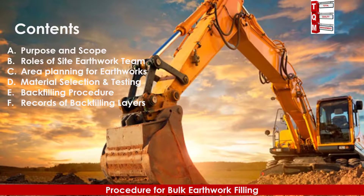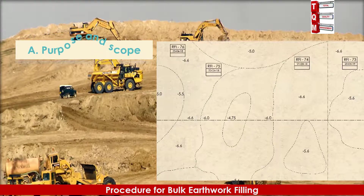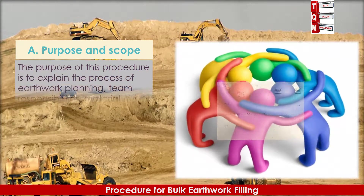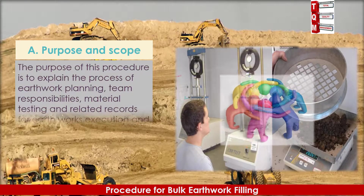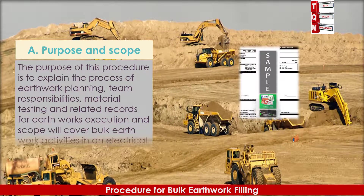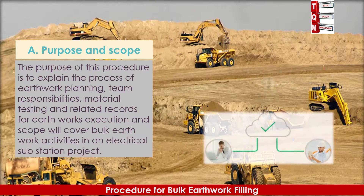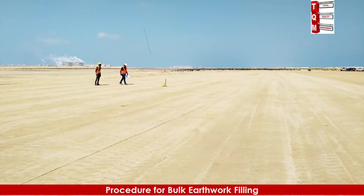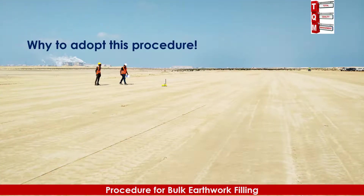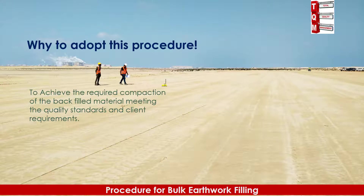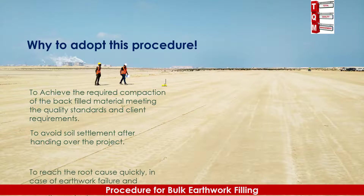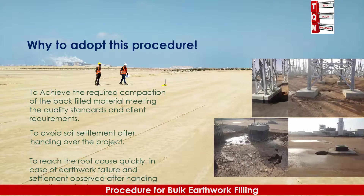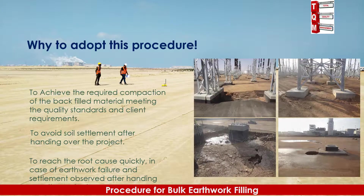Records of backfilling layers. The purpose of this procedure is to explain the process of earthwork planning, team responsibilities, material testing, and related records for earthworks execution. The scope covers bulk earthwork activities in an electrical substation project. This procedure should be adopted to achieve the required compaction of the backfilled material, to avoid soil settlement after handing over the project, and to find the root cause quickly in case of earthwork settlement.